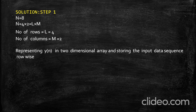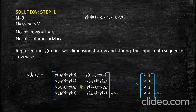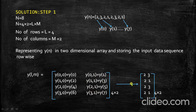The next step is to represent y(n) in two-dimensional array form and store the input data row-wise. With 4 rows and 2 columns, y(0,0) is the 0th row and 0th column, and y(1,0) is the 1st row and 0th column. Storing row-wise: y(0), y(1) in row 0; y(2), y(3) in row 1; y(4), y(5) in row 2; y(6), y(7) in row 3. Substituting the values: y(0)=2, y(1)=3, y(2)=2, y(3)=1, y(4)=2, y(5)=3, y(6)=2, y(7)=1. This gives a 4-by-2 matrix.